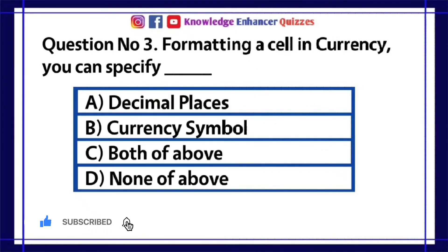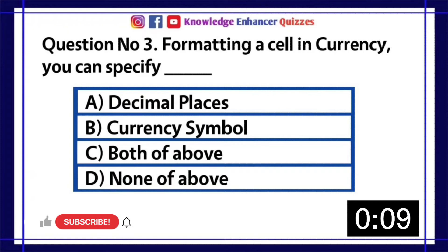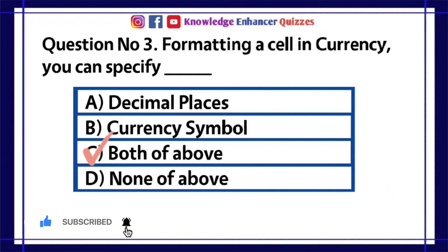Question number 3. Formatting a cell in currency, you can specify: A. Decimal places. B. Currency symbol. C. Both of above. D. None of above. Option C is the right answer.